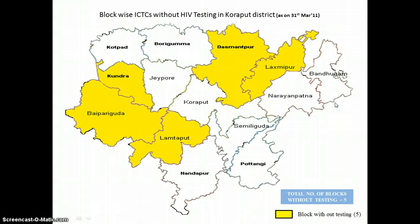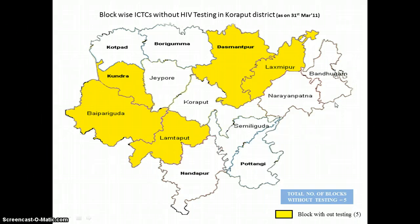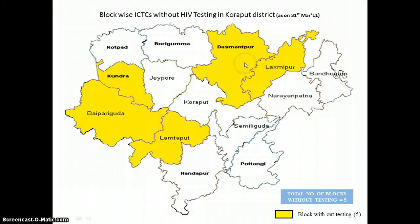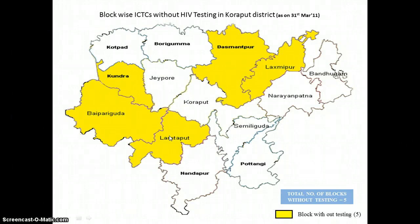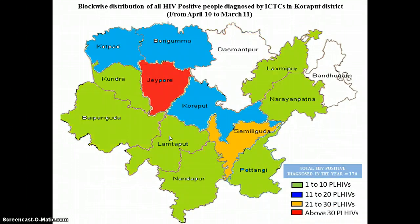Block-wise ICTCs without HIV testing in Koraput district. This district map shows clearly which blocks do not have a functional ICTC. We have ICTCs in Kundra, Vaipari Guda, Lamthapur, Rasmatpur, and Lashmipur, but these ICTCs are non-functional. Vaipari Guda and Lashmipur have standalone ICTCs, whereas Kundra and Lamthapur have facility-integrated ICTCs. However, all five blocks, despite having an ICTC, are non-functional for various reasons.